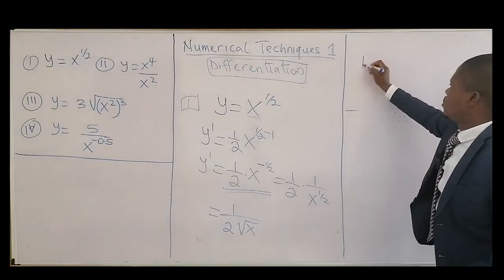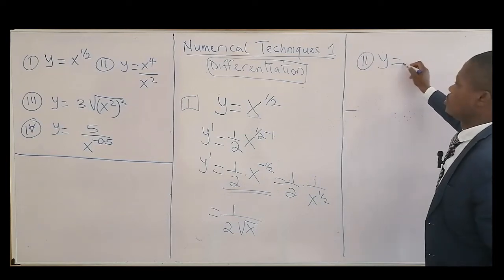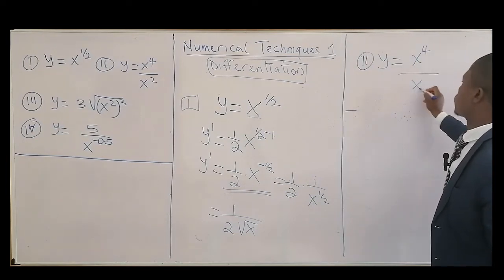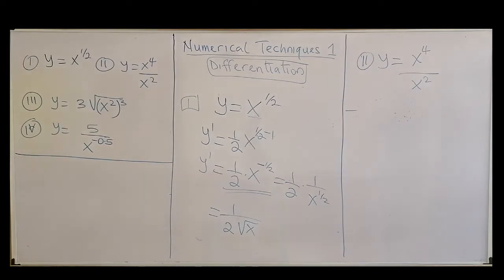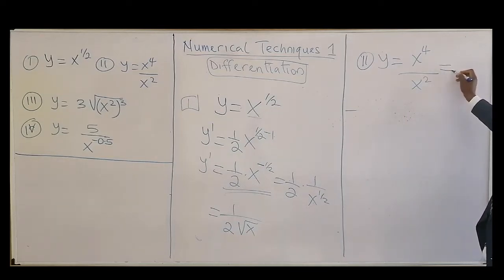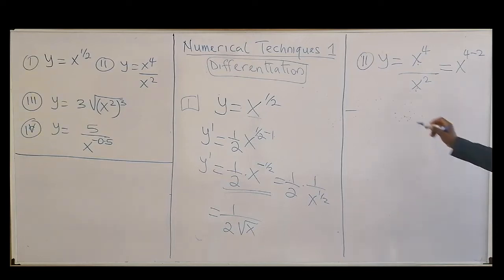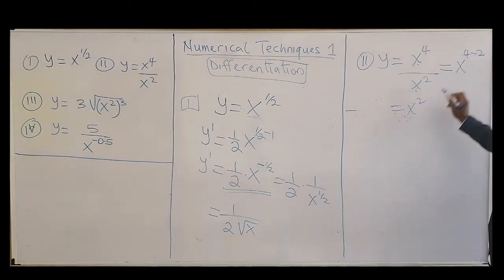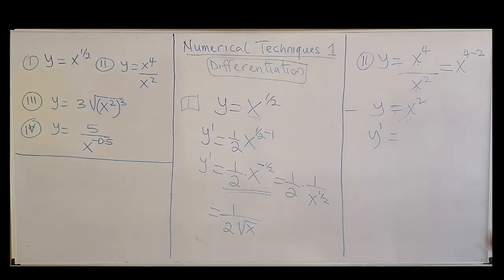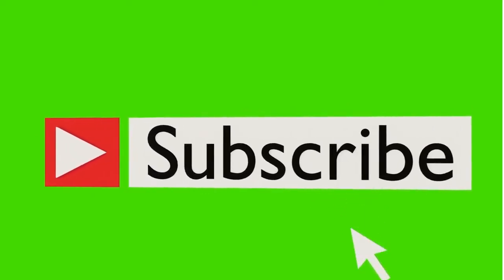Question two: y = x^4 over x^2. Before differentiating, do the algebra first. They have the same base and you are dividing, so subtract the powers: 4 minus 2 equals 2, giving y = x^2. Then dy/dx: the power 2 goes to the front, giving 2x. Question two is done.